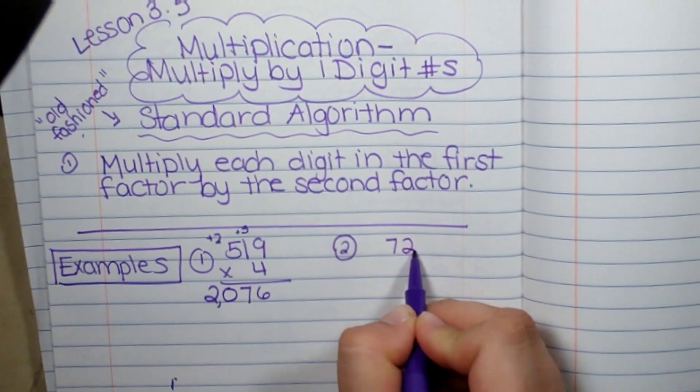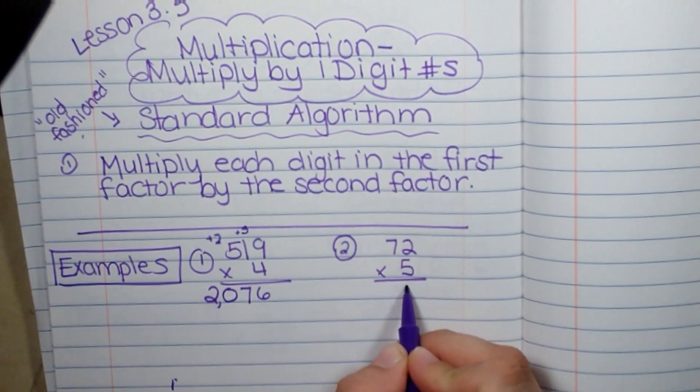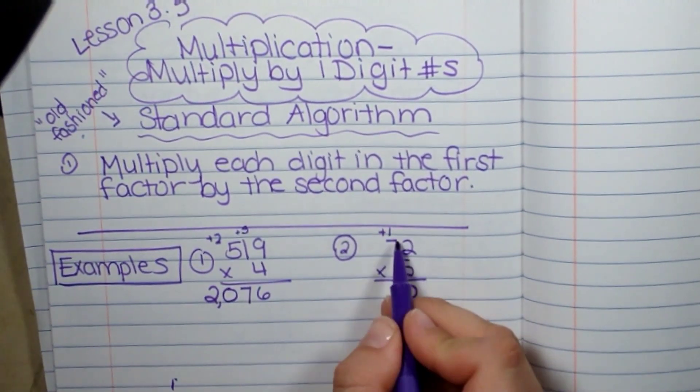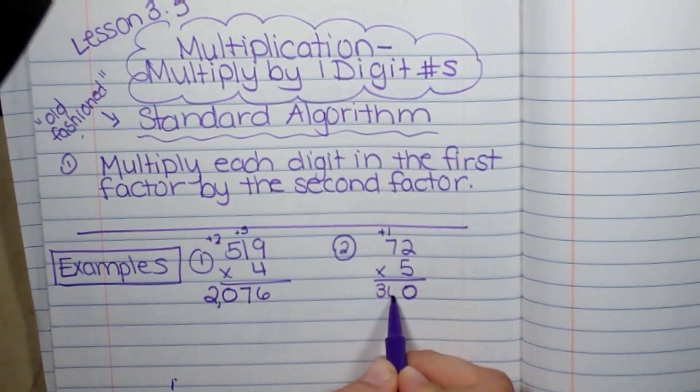72 times 5. 5 times 2 is 10. Then I carry my 1. 5 times 7 is 35 plus my 1 is 36.